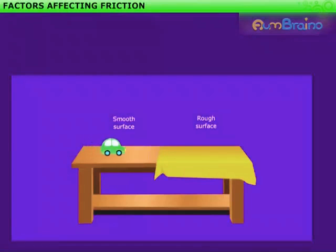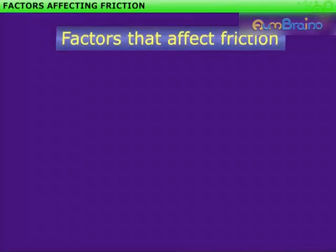Factors affecting friction. Friction depends on the smoothness or roughness of the surface of the object. Some of the factors that affect friction are: